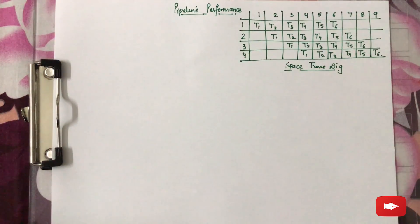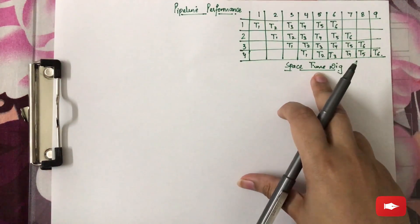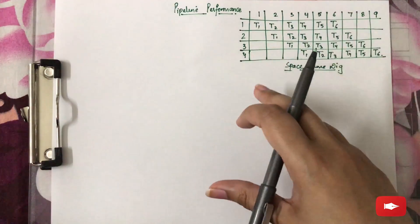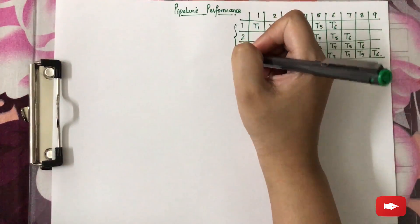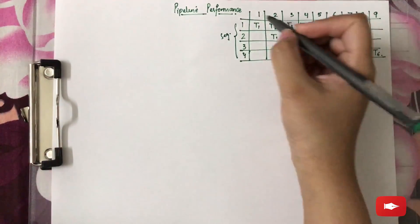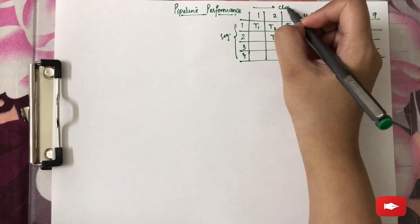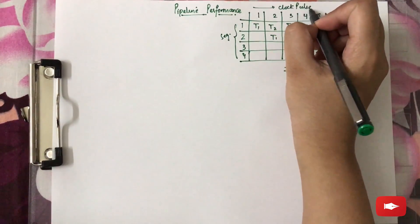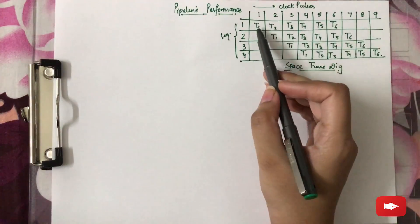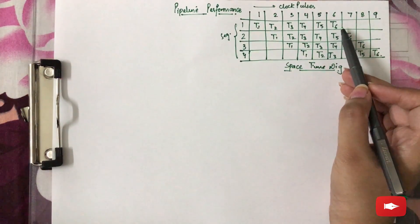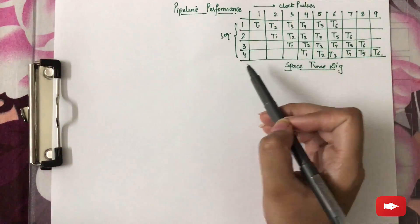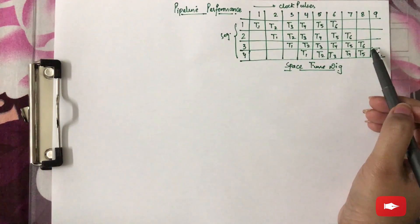First, you need to understand the concept of the space-time diagram, which is illustrated here. These 1 to 4 are the segments, and these 1 to 9 are the clock pulses, where T1 to T6 are the tasks to be performed. This is the space-time diagram denoted here.